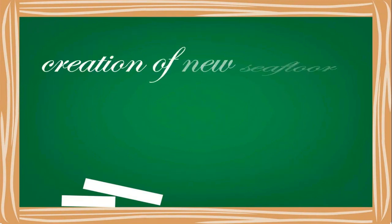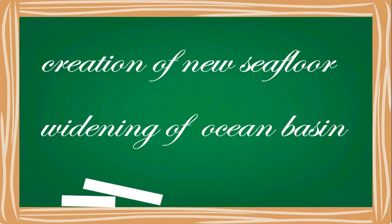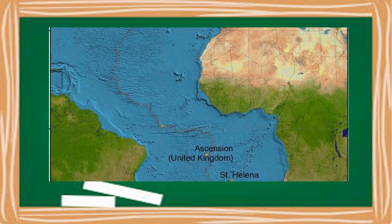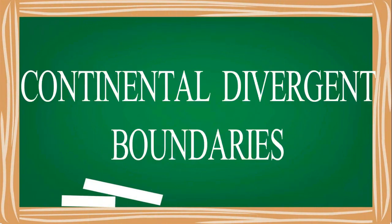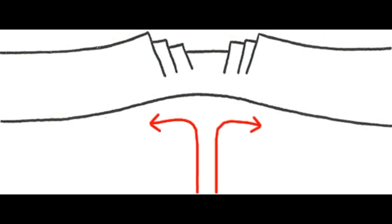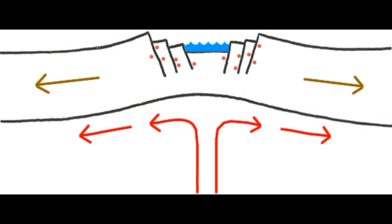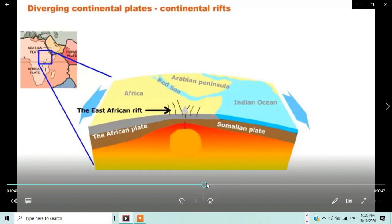Other effects include shallow earthquake activity, creation of new seafloor, and a widening ocean basin. The mid-oceanic ridge is a formation resulting from the diverging of oceanic plates, and the Mid-Atlantic Ridge is a classic example. When a divergent boundary occurs beneath a thick continental plate, the energy is not vigorous enough to create a clean single breakthrough.